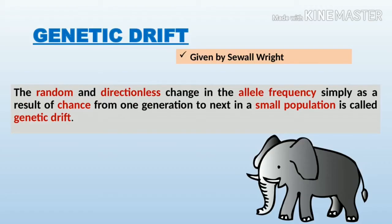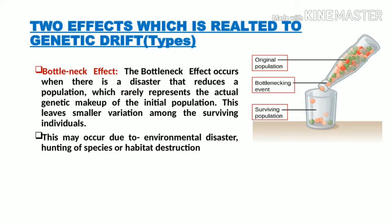We have seen the definition of genetic drift — it is a random and directionless change in allele frequency that simply occurs by chance, and it has the probability to transfer from one generation to the next in a small population. In the second video, we discussed the bottleneck effect.